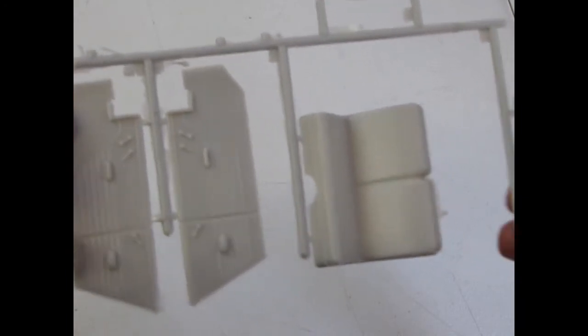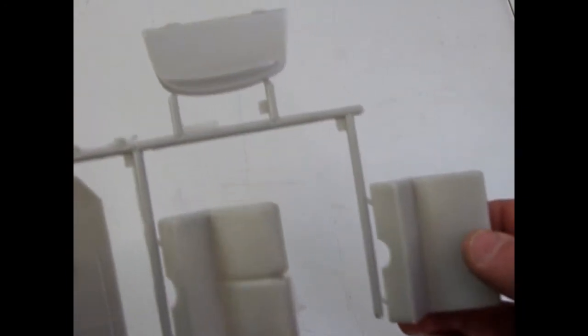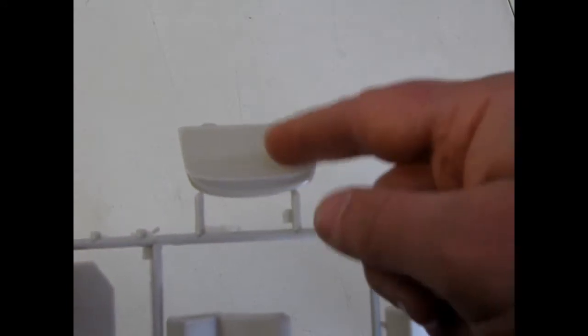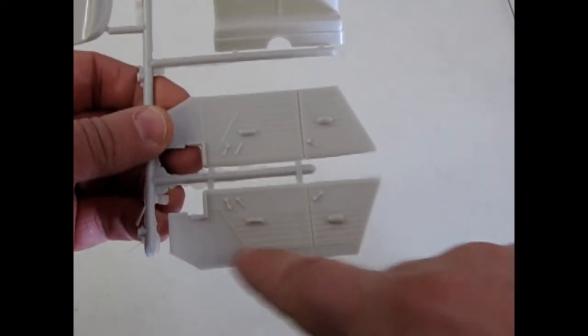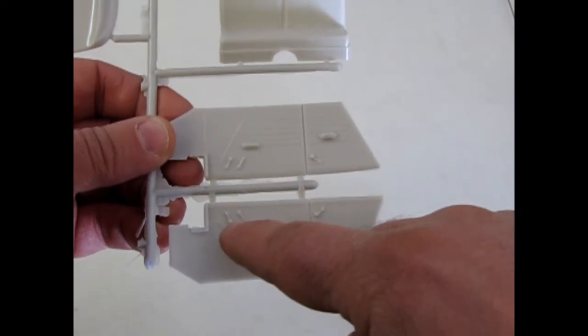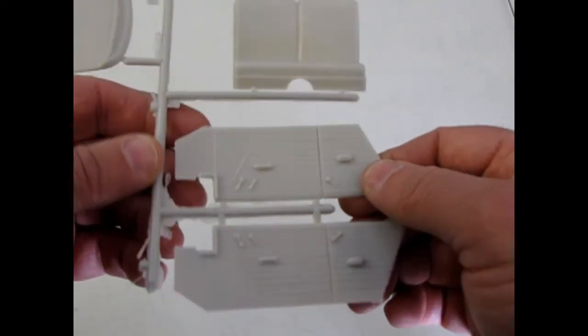The interior upholstery patterns. And it's nice that they give you this too. That's your package shelf in the back. It's nice that they do these as separate pieces so that you can detail the chrome handles without having to try to paint them in a body tub.